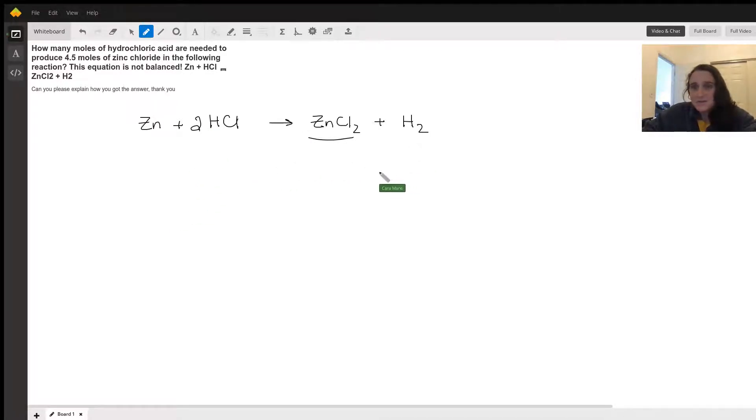I also have two hydrogens. To start this problem, we're going to start with 4.5 moles of zinc chloride, and then I'm going to set up a ratio using my balanced equation. Since I want to